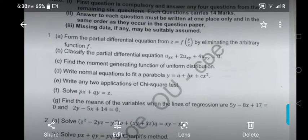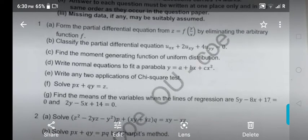So that can be you can write applications and properties. Then F question is what? PX plus QY is equal to Z. It is a Lagrange form. Right? So capital P is X, capital Q is Y, and capital R is Z.